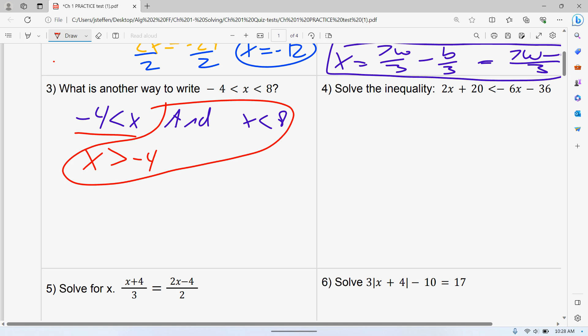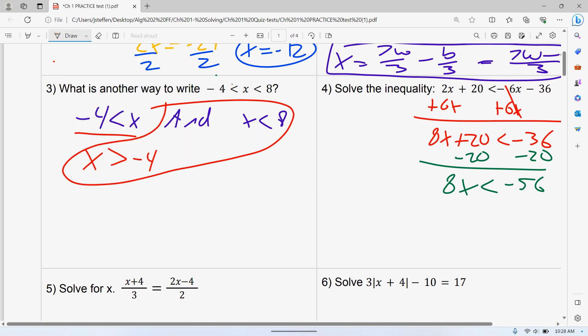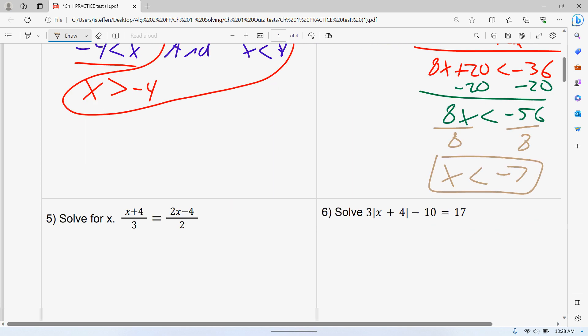Number four, solve the inequality. Again, if you want to subtract two X from both sides you can, but eventually you'll have to divide by a negative. So I personally like to add six X. That cancels. We get eight X plus 20 is less than negative 36. Then subtract 20 from both sides. I get eight X is less than negative 56. Last but not least, divide both sides by eight. I get X is less than negative seven. It doesn't tell you to graph, so you can leave it like that.